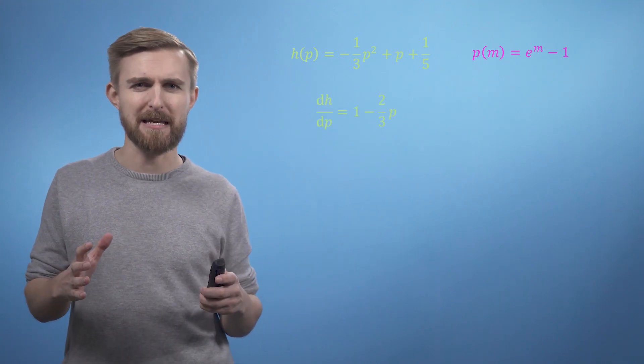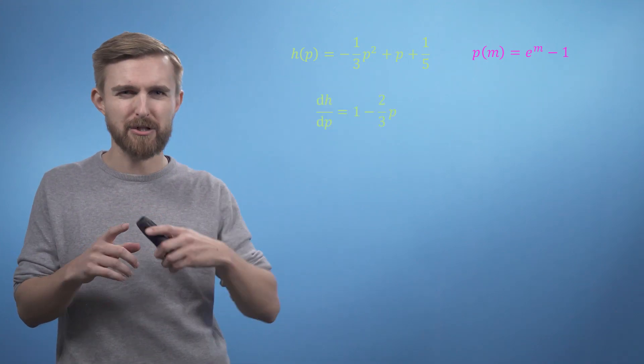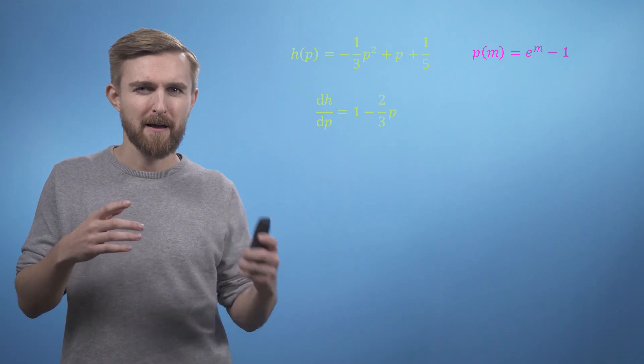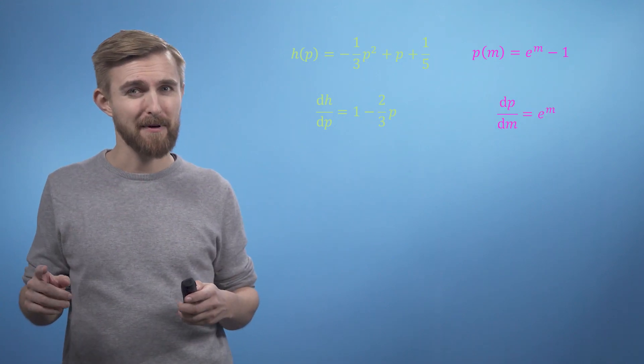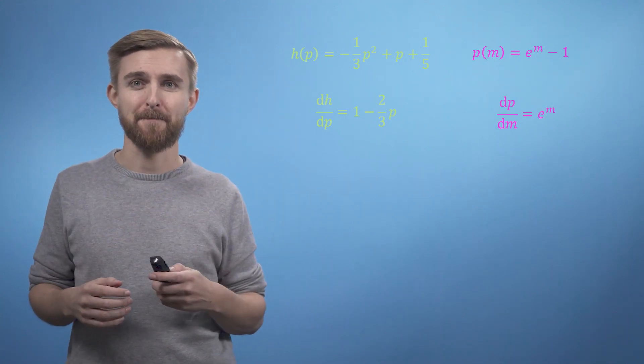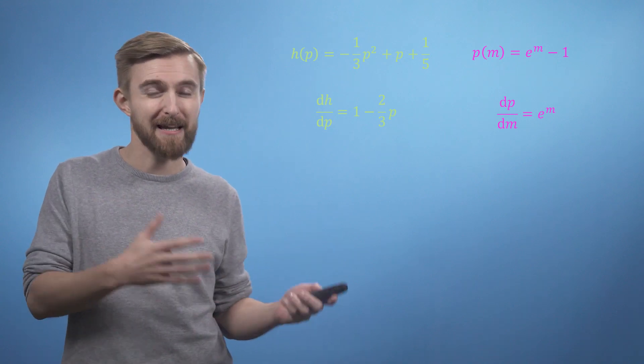which give us DH by DP equals 1 minus 2 over 3P. DP by DM equals e to the power of M. And then multiplying these together is simple enough.